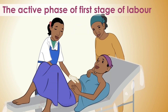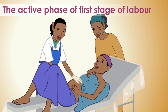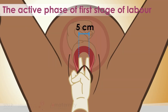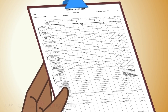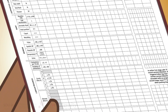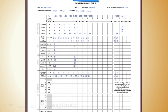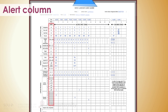The labor care guide is replacing the partograph and should be started in the active phase of the first stage of labor when cervix is dilated 5 cm or more. It allows women without risk factors for complications to progress slower than 1 cm per hour, giving different time estimates for each centimeter to prevent unnecessary interventions. The alert column presents the abnormal labor observations that require further assessment and action. If labor observations do not meet any of the criteria in the alert column, labor progression and care should be regarded as normal and no medical intervention is necessary.